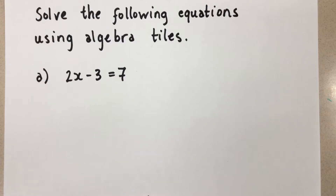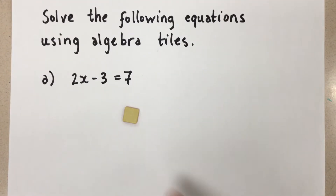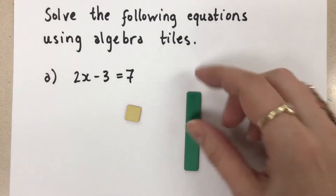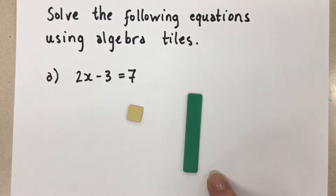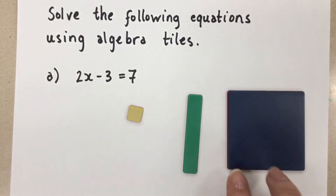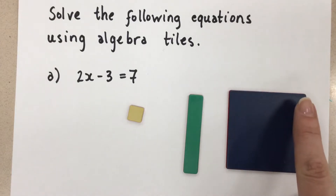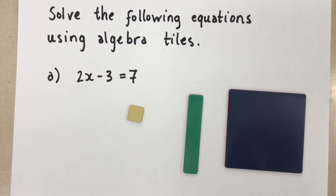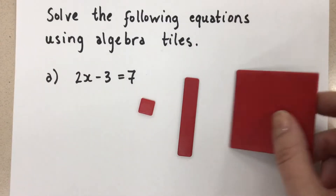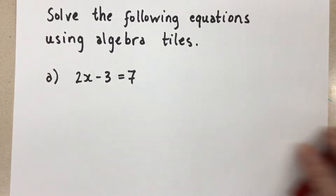We're going to start off by talking about what our algebra tiles represent. This tile will be positive 1. This tile — we don't know the length of it — we'll call that x since it's an unknown. And then this one we're not using today, but we usually call it x squared because it's x times x. If we want these to be negative, we flip them over to the red side and then they all become negative.